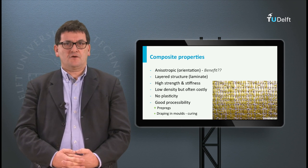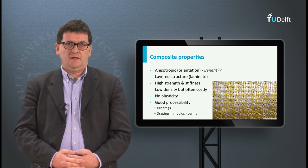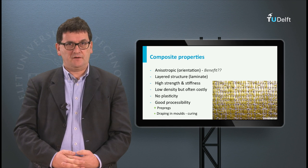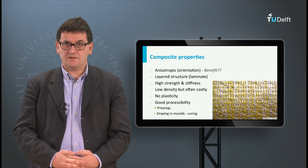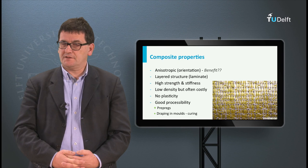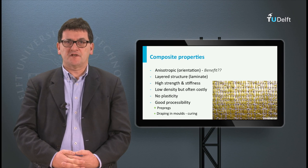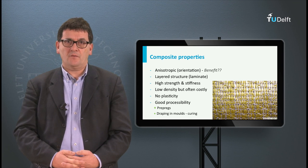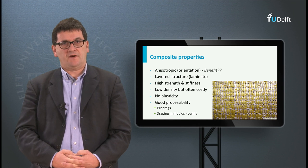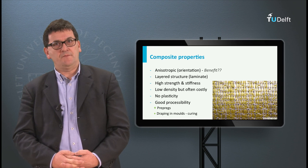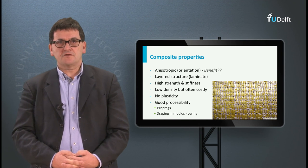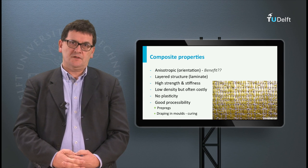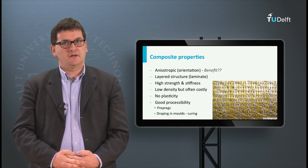Composites are usually costly and show very little or no plastic behavior — those are disadvantages. But the processability is usually good. We may work with prepregs where the resin and fibers are already mixed. Most composites can also be draped easily in a mold, just like fabrics.